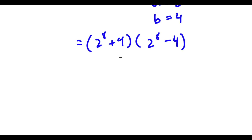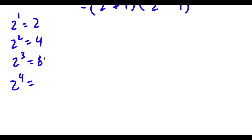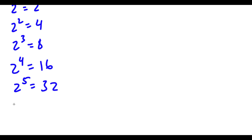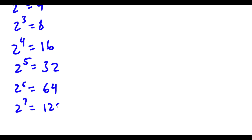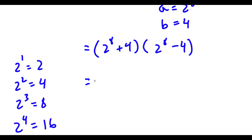Let's calculate 2 to the power of 8. We know 2^1 = 2, 2^2 = 4, 2^3 = 8 — notice it doubles every time. So 2^4 = 16, 2^5 = 32, 2^6 = 64, 2^7 = 128, and 2^8 = 256. So now I have (256 + 4) times (256 - 4).